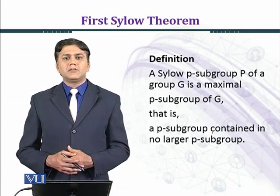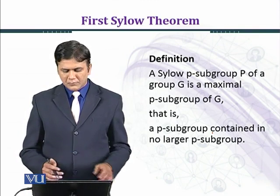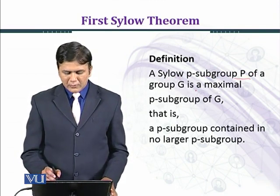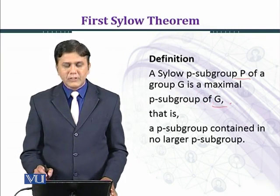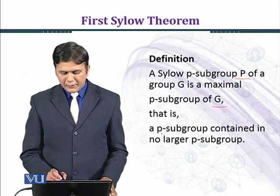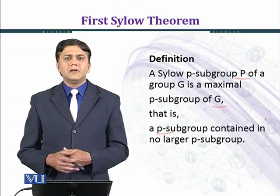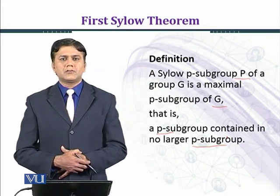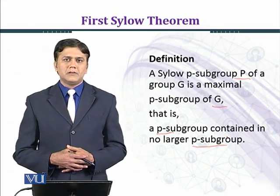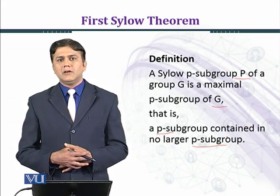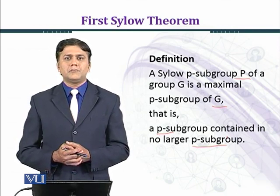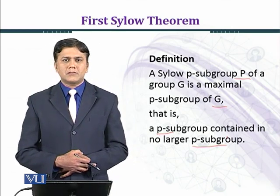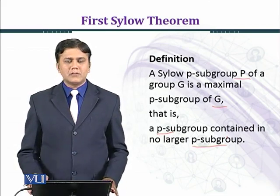We now introduce the Sylow P-subgroup. A Sylow P-subgroup of a group G is a maximal P-subgroup of G, that is, a P-subgroup contained in no larger P-subgroup. The First Sylow Theorem provides the result which guarantees that a Sylow P-subgroup of this type exists.